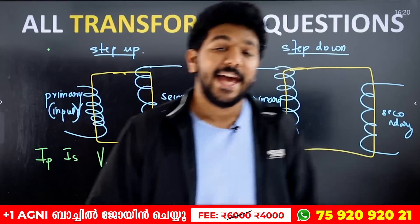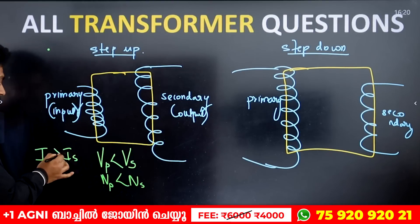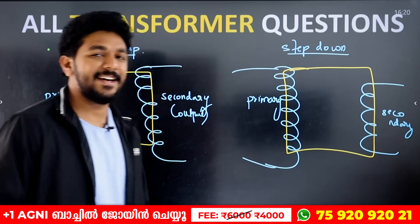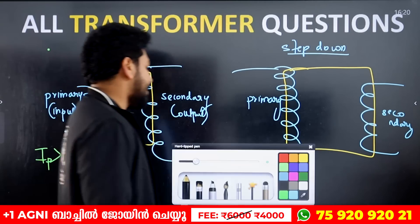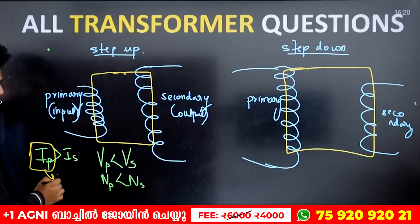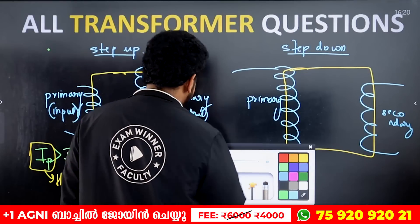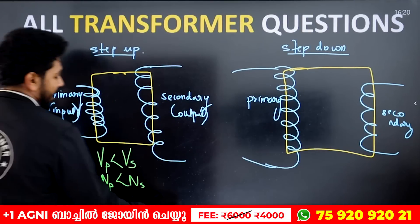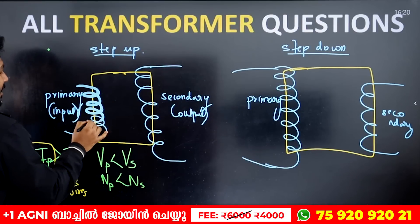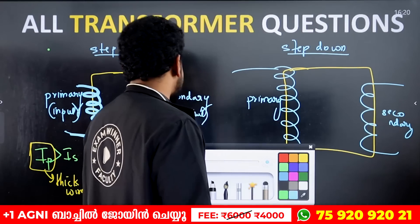If current is greater, then the secondary current will be greater. The primary will be greater. That is why thick wires will be used when current is greater. The thickness of the wires in the primary is like this — it is very thick. That is why we have thick wires in the primary for a step-up transformer.